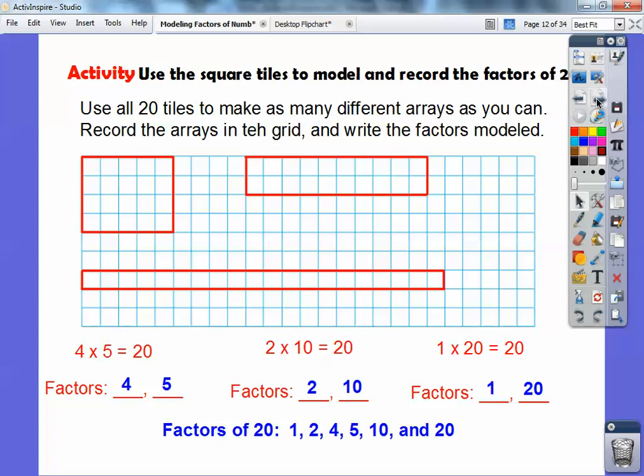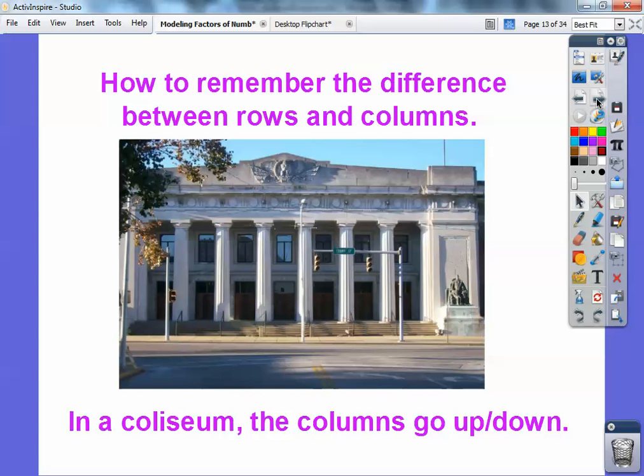Alright, what else do we have here? Oh, this is how I remember, one of my students told me this, how to remember the difference between columns and rows. In a coliseum, you guys, coliseums have these columns that go up and down, that hold up the coliseum. So, columns go up and down, and rows go left and right. So, like this sidewalk right here would be a row right here, and the columns that go up and down are columns, okay? That's how I remember, alright?